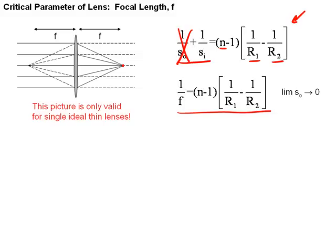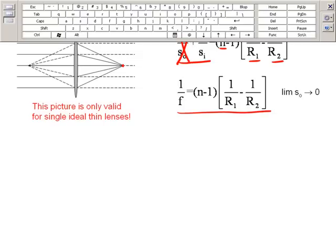Another thing to note is that if I flip the lens over or the rays come from the other side, the focal length for ideal thin lenses are the same.